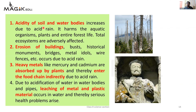Acid rain harms the aquatic organisms, plants and entire forest life. Total ecosystem are adversely affected. If the acid rain falls into water bodies, it will increase the acidity level of water bodies, harming aquatic organisms living in the water.